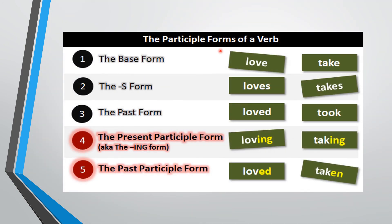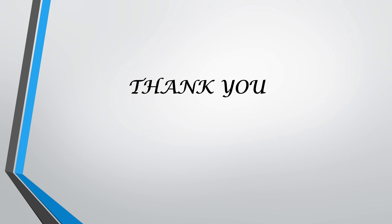Let's discuss present and past participles in detail. The participle forms of verbs include the base form, the -s form, and the past form. For the present participle, we add -ing to the verb. If we add -ed or -en, it becomes the past participle. So here we come to the end of the video. I hope you enjoyed this and learned about adjectives, adjective clauses, and participial adjectives. Have a good day — thank you!